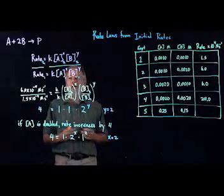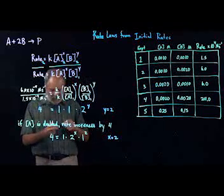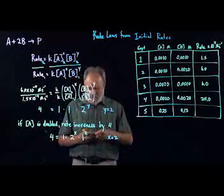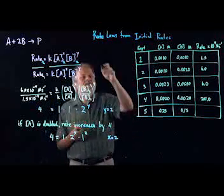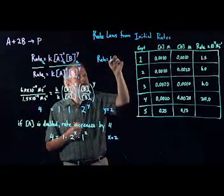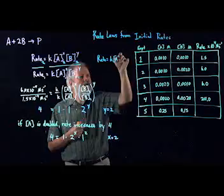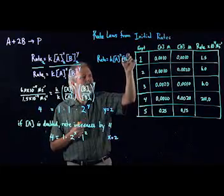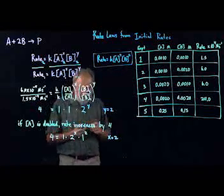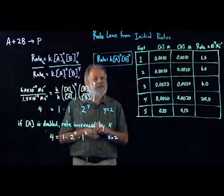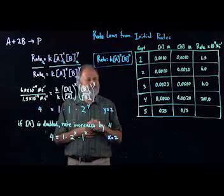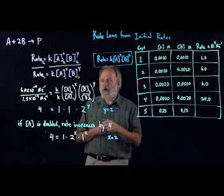So the rate law is now known. We can write that right here by the experiment. Now we know rate is equal to k times A squared times B squared. That's one type of problem that you would be expected to be able to work in any situation, on an exam, online homework, whatever.